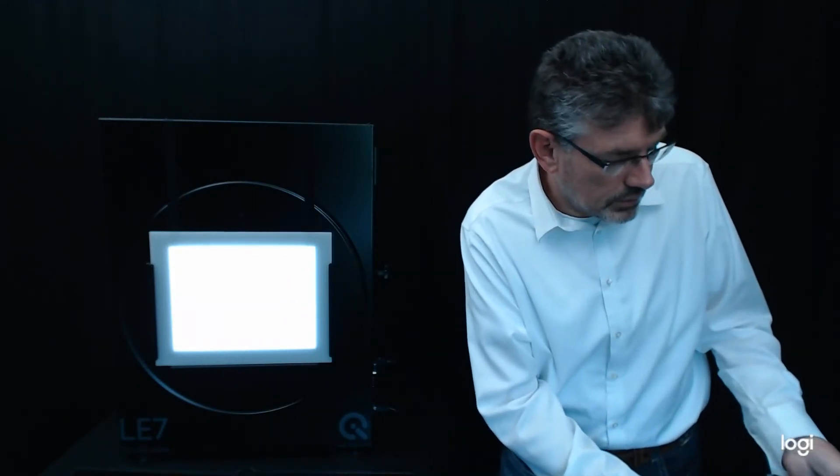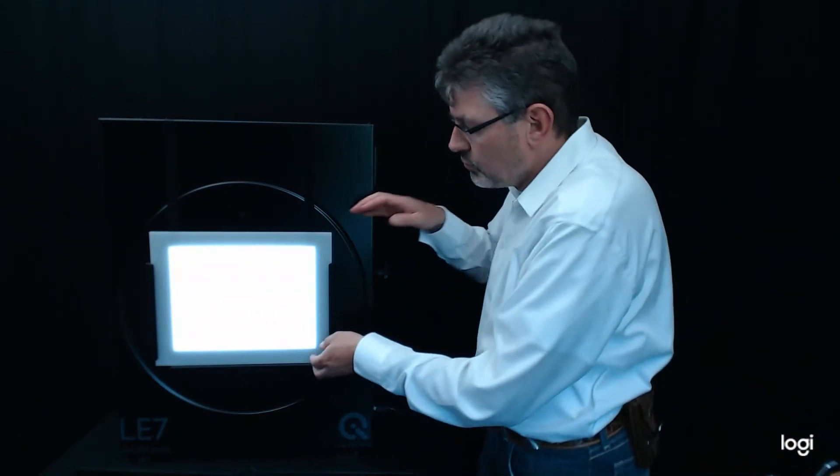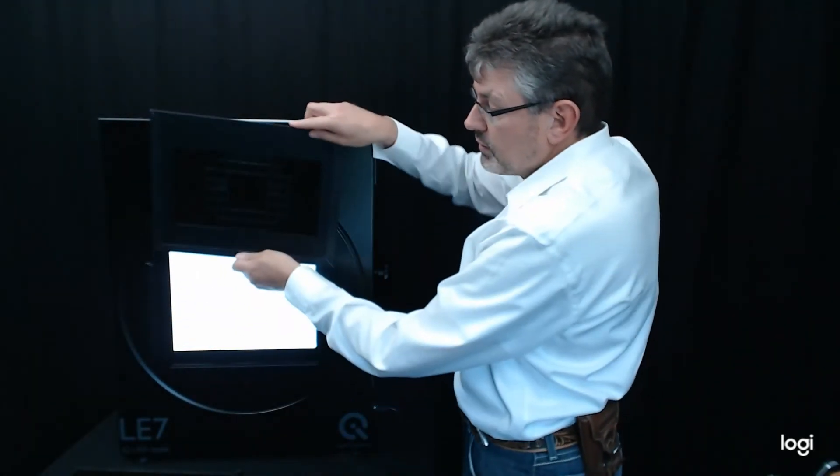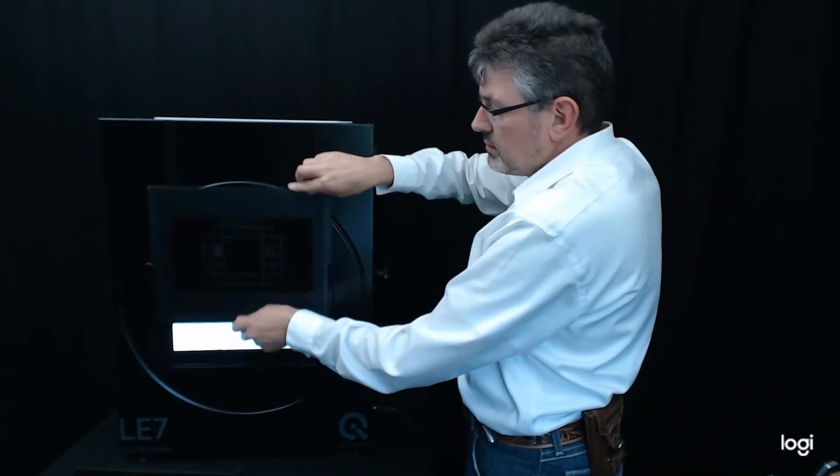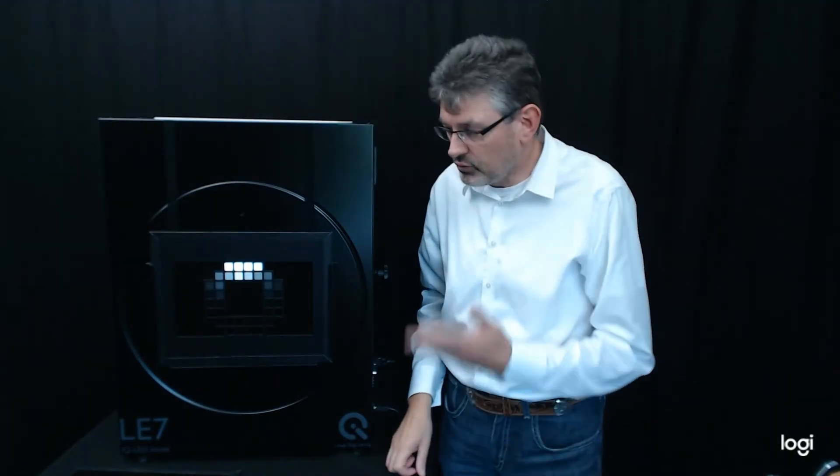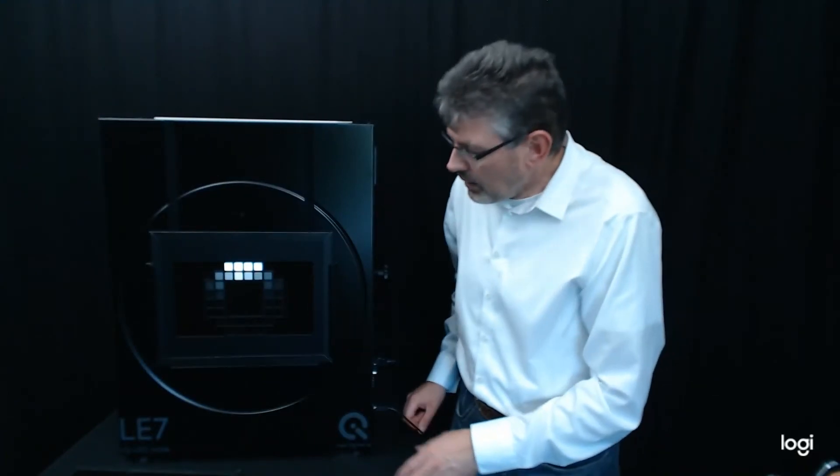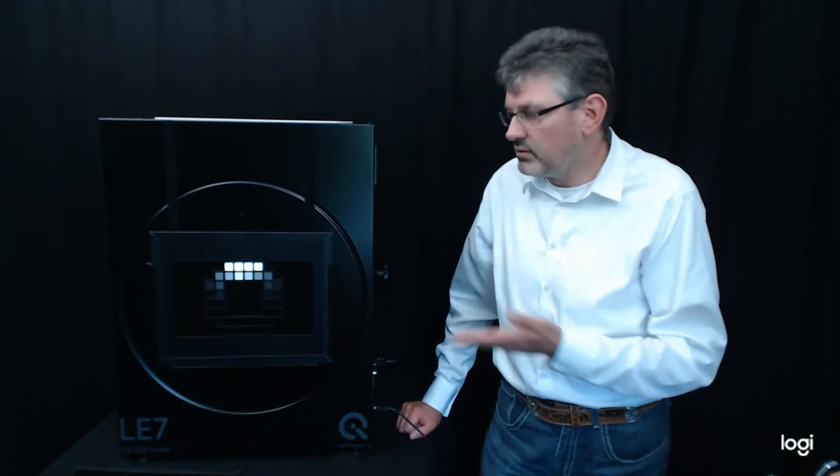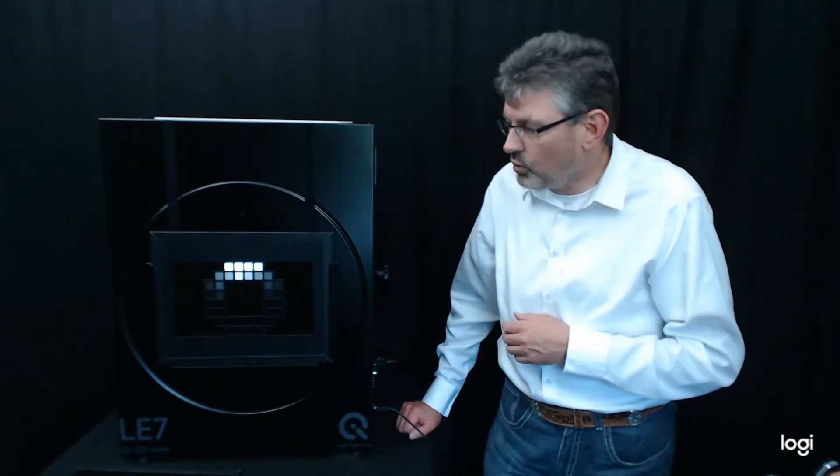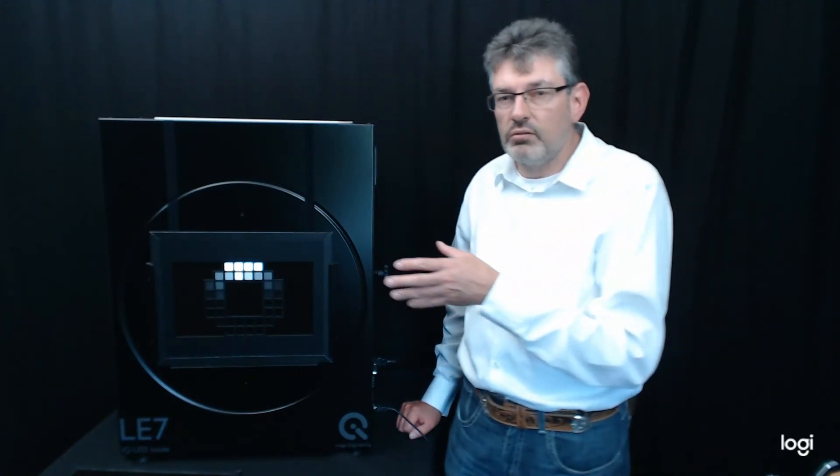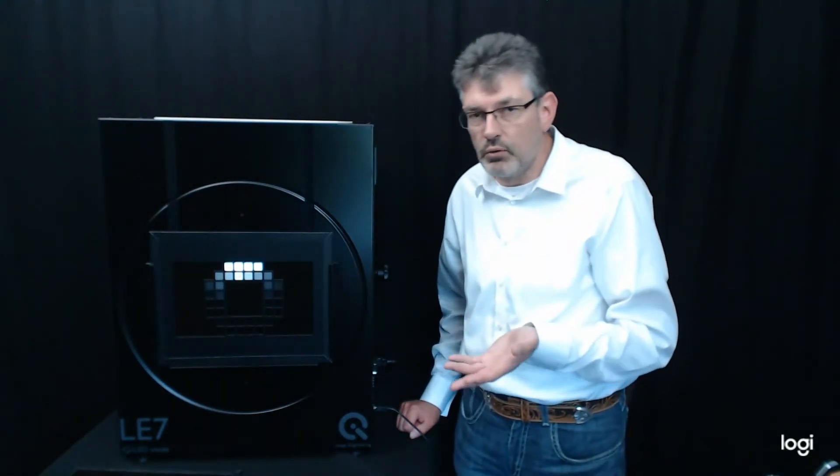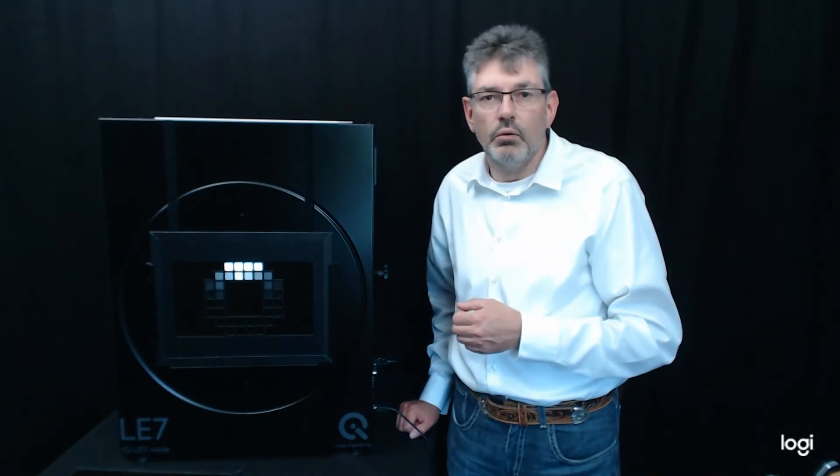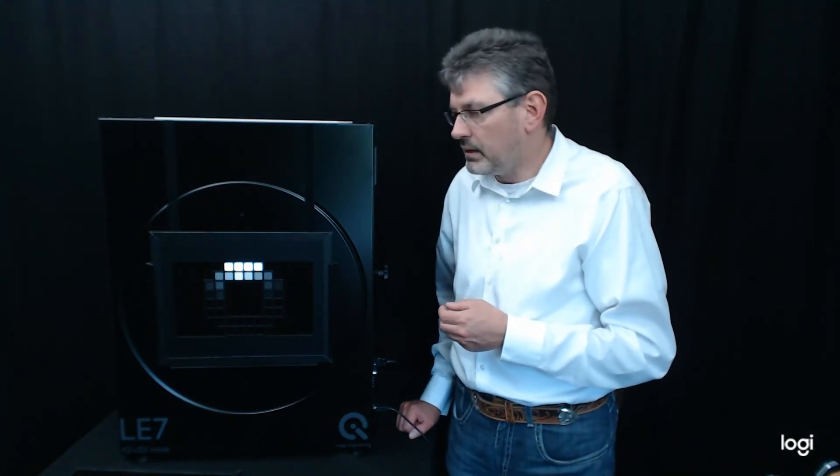Another thing we can do is we can use it for OECF measurements. OECF stands for Optoelectronic Conversion Function. And the OECF is described in an ISO standard, 14524. And that basically uses a grayscale with a very high contrast. In this case, it's a million to one or over a million to one. You can take a picture of this grayscale and determine the dynamic range from there, the noise performance, the sensitivity of your camera and all what the OECF is designed for.